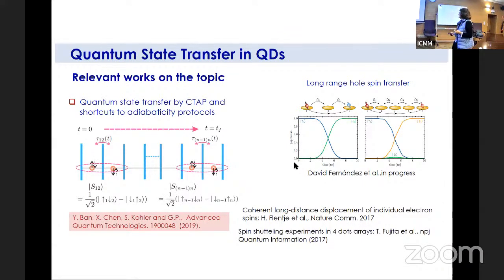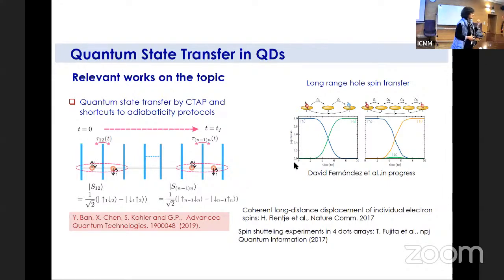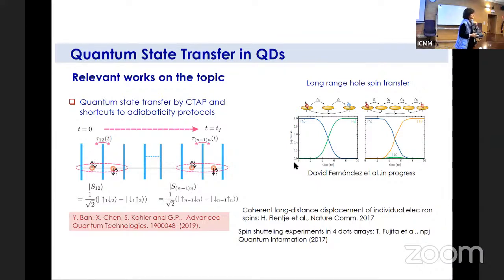David Fernandez is extending these ideas to hole spin qubits in quantum dots, which are now very popular because in the valence band the p-type wavefunction makes the interaction with nuclear spins very small. Even in gallium arsenide, which has strong hyperfine interaction, hole spin qubits are very useful, and they also have inherent spin-orbit interaction enabling very fast operations. One can apply these protocols where spin-orbit is important and even control the polarization of the spin by controlling the system parameters.